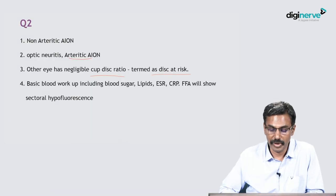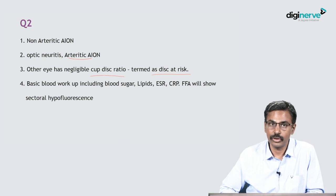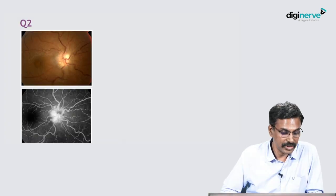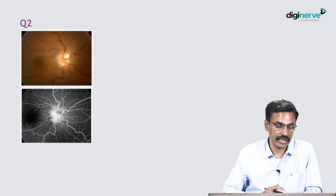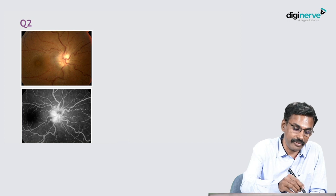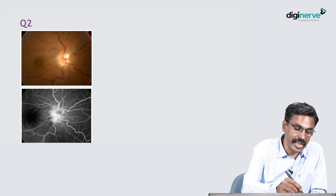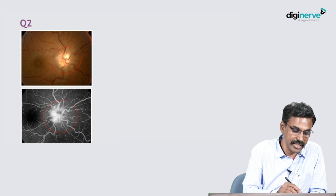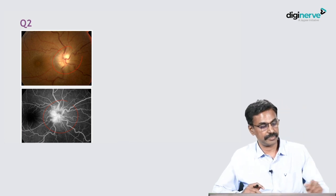Investigations to be done include basic blood workup including blood sugar and lipid profile, ESR and C-reactive protein to rule out arteritic AION, and fluorescein angiography which will show sectoral hypofluorescence. In another patient with non-arteritic AION, we can see sectoral pallor and the fluorescein angiogram showed sectoral hypofluorescence.